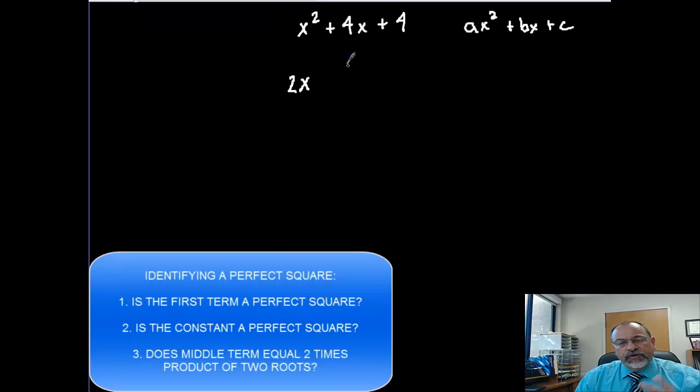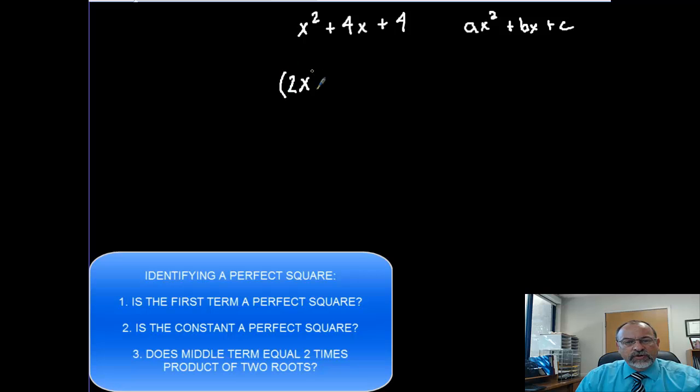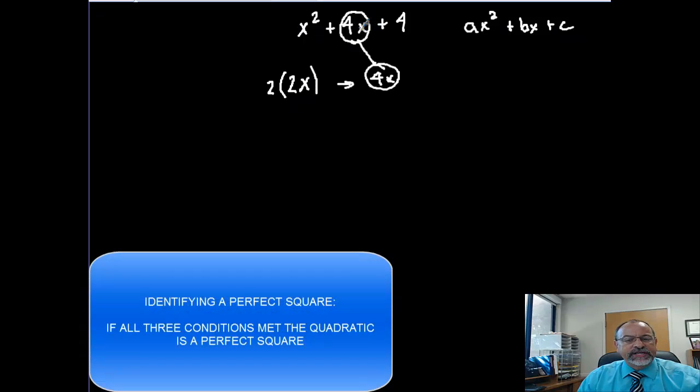Now, the third thing I need to look for is if I take these two multiplied together and I double them, I'll get a number, 4x. If this doubled value is exactly the same as this middle term, then what we have here is a perfect square, which means we can factor it very quickly.